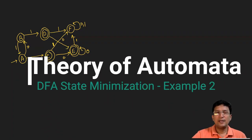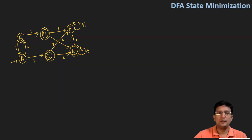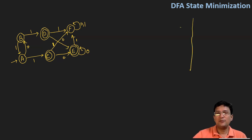Hello everyone, we will once again discuss the state minimization or DFA state minimization. For this question, you can see that there are multiple final states, so we can solve this kind of question wherein we have multiple final states. Let's draw the transition table first, because transition tables are the backbone of DFA state minimization.